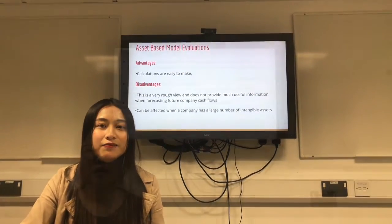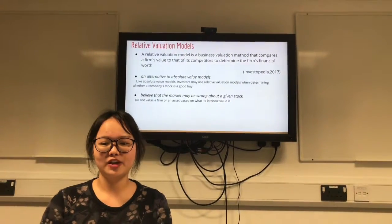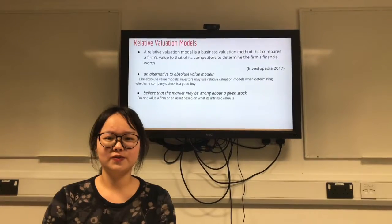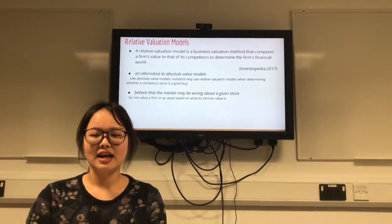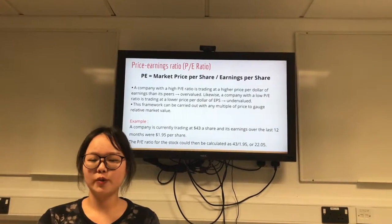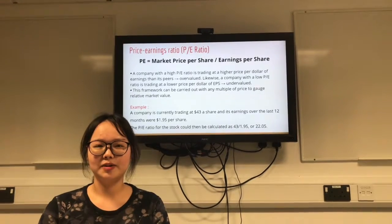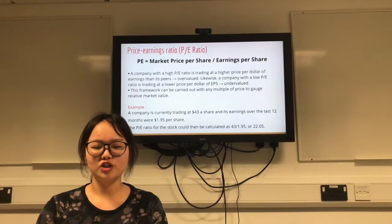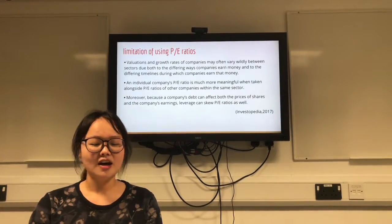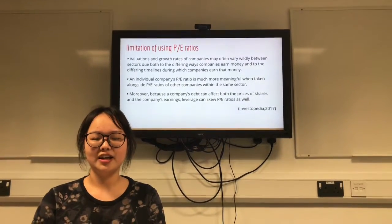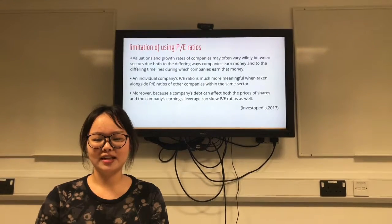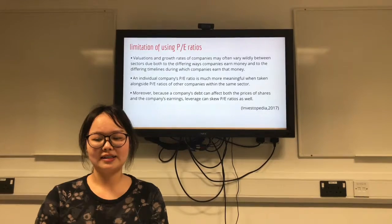Now I will talk about the relative valuation models, which are business valuation methods where the value of an asset is compared to the values assessed by the market for similar or comparable assets. It is an alternative to absolute value models; however, they differ in that relative valuation models believe the market may be wrong about a given stock. One of the most popular relative valuation models is the price-earnings ratio, calculated by dividing stock price by earnings per share. A company with a high P/E ratio is considered overvalued, otherwise undervalued. You can see an example here which is very easy to use and calculate. However, the limitations of the P/E ratio should be considered — values and growth rates of companies may vary widely between sectors due to different ways companies earn money and different timelines.